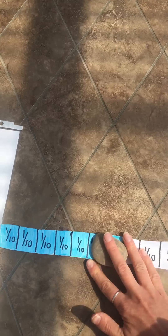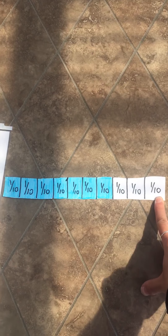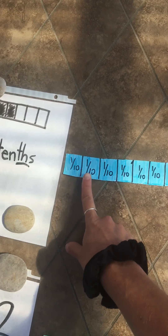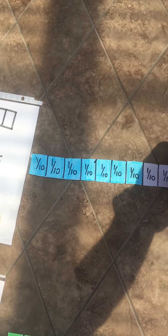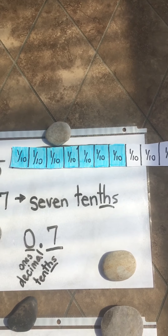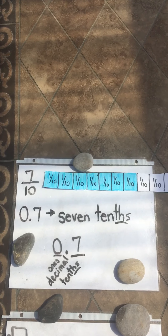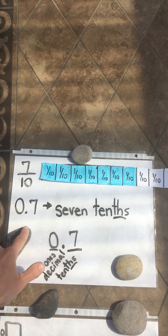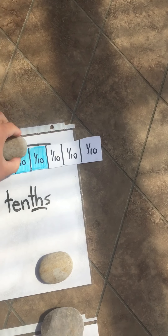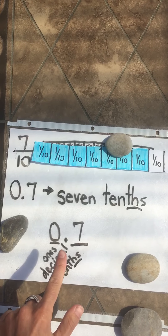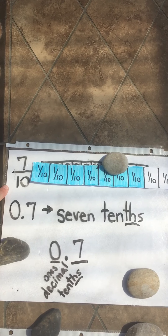On my next strip I have some that are shaded in. I have 10 altogether because I'm in the tenths, and I have 7 blue pieces shaded in. So if I put this over top here, it connects to what's going on on this sheet of paper. 7 tenths goes 7 over 10, or in decimal form 0 decimal 7. I have my ones place as 0 because I only have part of this whole. I have a decimal and a 7 — 7 tenths. It's just a different way to write this fraction.